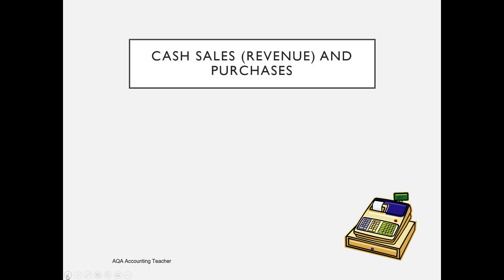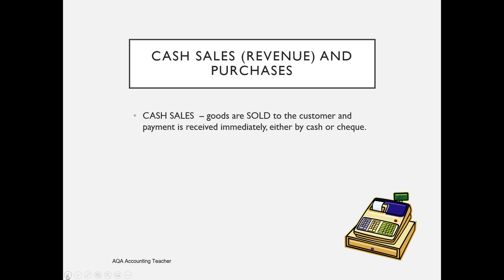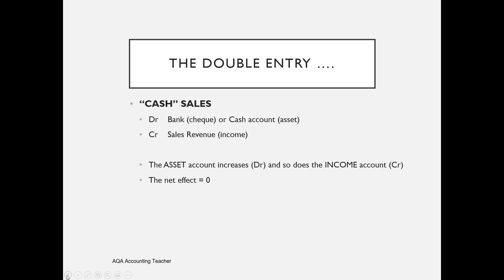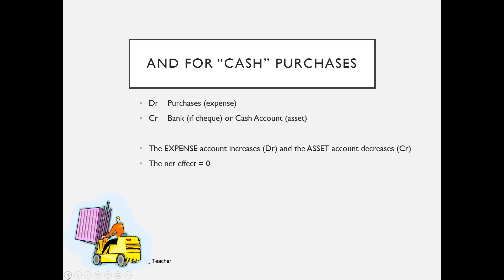A reminder about cash sales and purchases. Cash sales are where goods are sold to the customer and payment is received immediately, either by cash or cheque — always debit the bank or cash to increase the asset and credit the sales account to record the income. Cash purchases are where we've bought goods for resale and paid immediately — always debit purchases (that's the expense) and credit the bank or cash to reduce the relevant asset. The net effect is always zero.